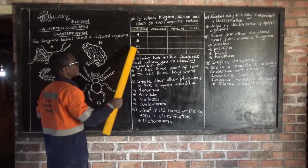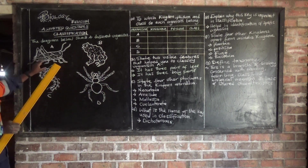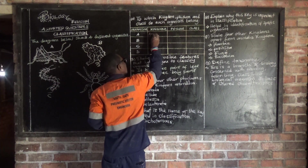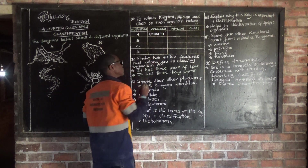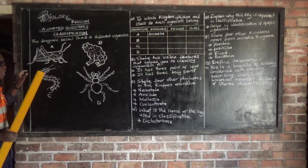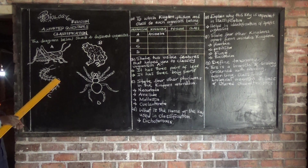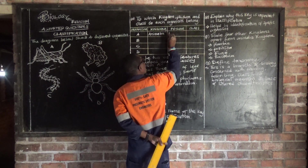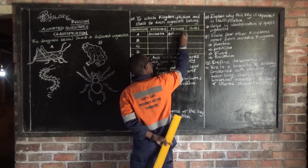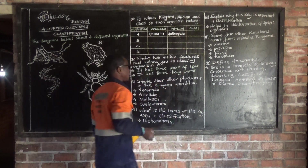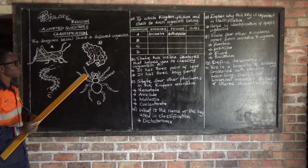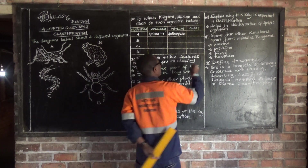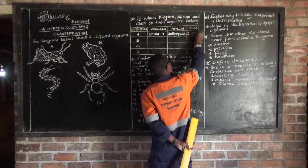I'm going to start with organism A. This one is a grasshopper. It belongs to the Animalia kingdom. To which phylum does this grasshopper belong? A grasshopper belongs to a phylum called Arthropoda. Then to which class does this grasshopper belong? A grasshopper belongs to a class called Insecta.